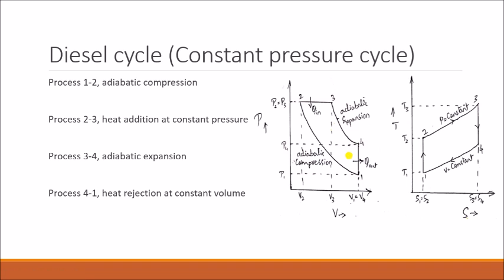All these processes are taking place exactly like in your diesel engine. Once the air is sucked inside the cylinder, the inlet and exhaust valves are closed and the piston starts compressing the air — that is adiabatic compression. Once the piston compresses, the fuel is supplied through the fuel injector, burning takes place — that is heat addition at constant pressure. After that the gas expands adiabatically, and finally the heat is rejected at constant volume. This cycle resembles the diesel engine.